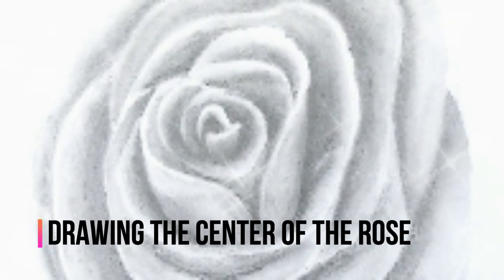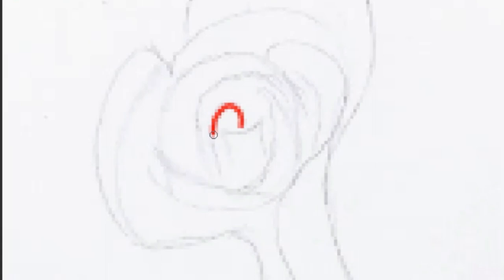Drawing the center of the rose can be the hardest part, so for my first tip I will show you a trick to draw the center of a rose. We will start with drawing a hook and at the end of the hook we will draw a three-sided square with each side curving into the square.